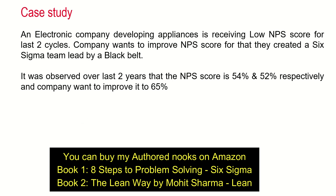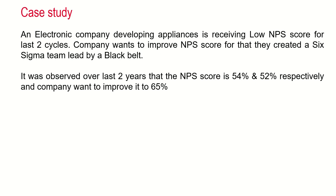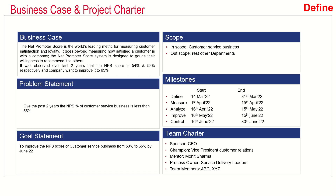So let's begin with the case study. An electronic company developing appliances has been receiving a low NPS score for the last two cycles. The company wants to improve their NPS score, and for that they created a Six Sigma team led by a Black Belt. It was observed over the last two years that the NPS score was 54% and 52% respectively, and the company wants to improve it to 65%. Keeping all this in mind, they created a project charter.